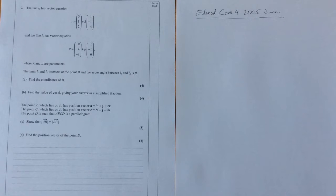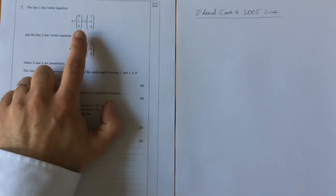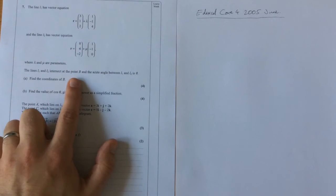This is a question from the Edexcel Core 4 2005 June paper, question number seven, that a student has asked about. So we're going to work through this one. First question, as we can see, we've got the vector equation of two lines and we're asked to find the point of intersection for those two lines.